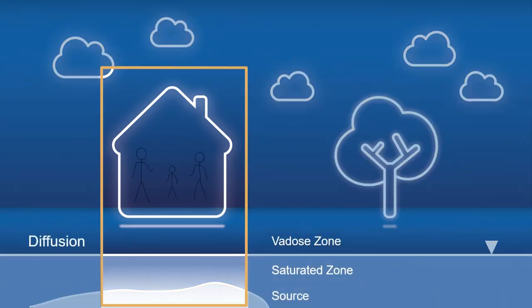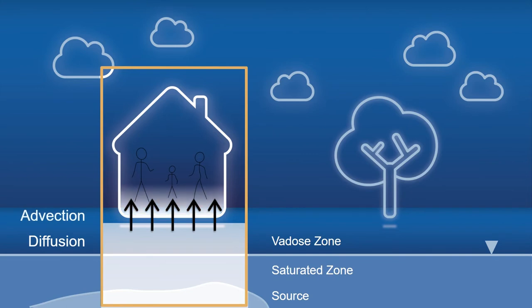Once we've identified that a VSC is present in the indoor air due to vapor intrusion at a concentration that poses a risk to the health and safety of the building occupants, then it's time for mitigation.